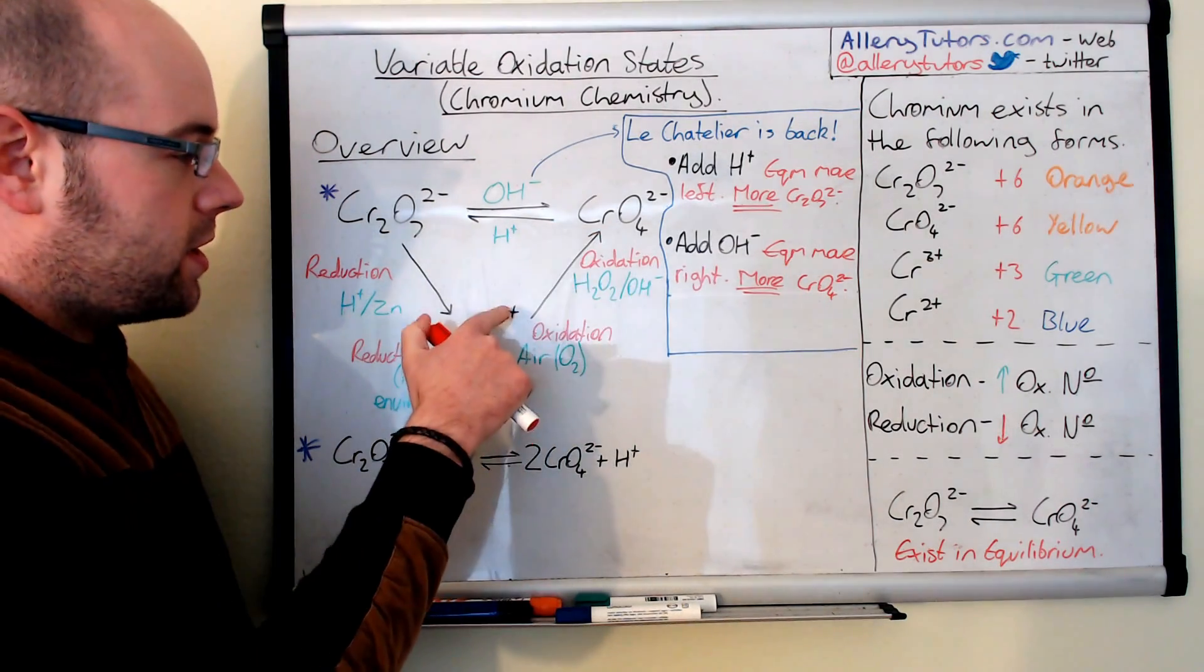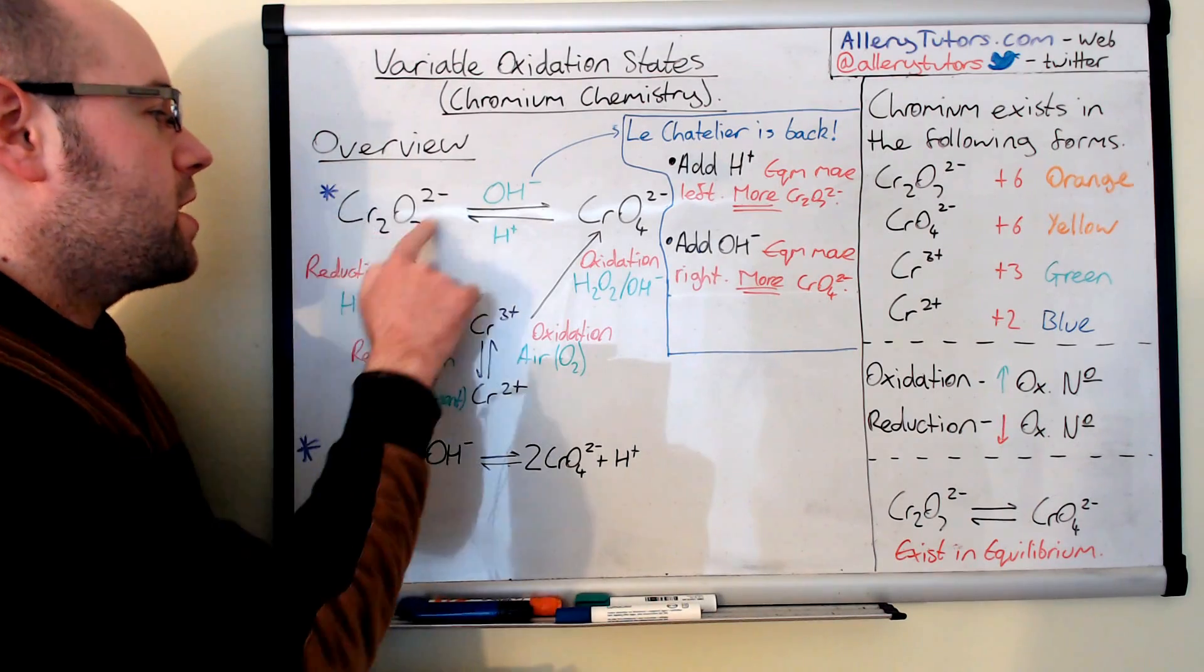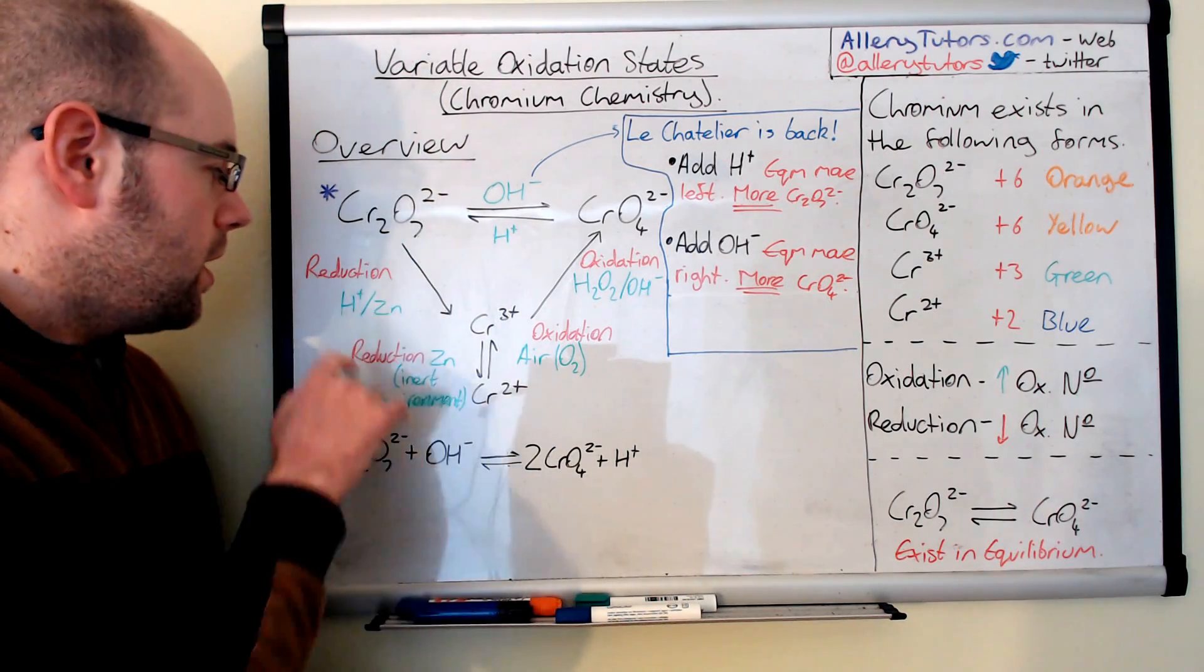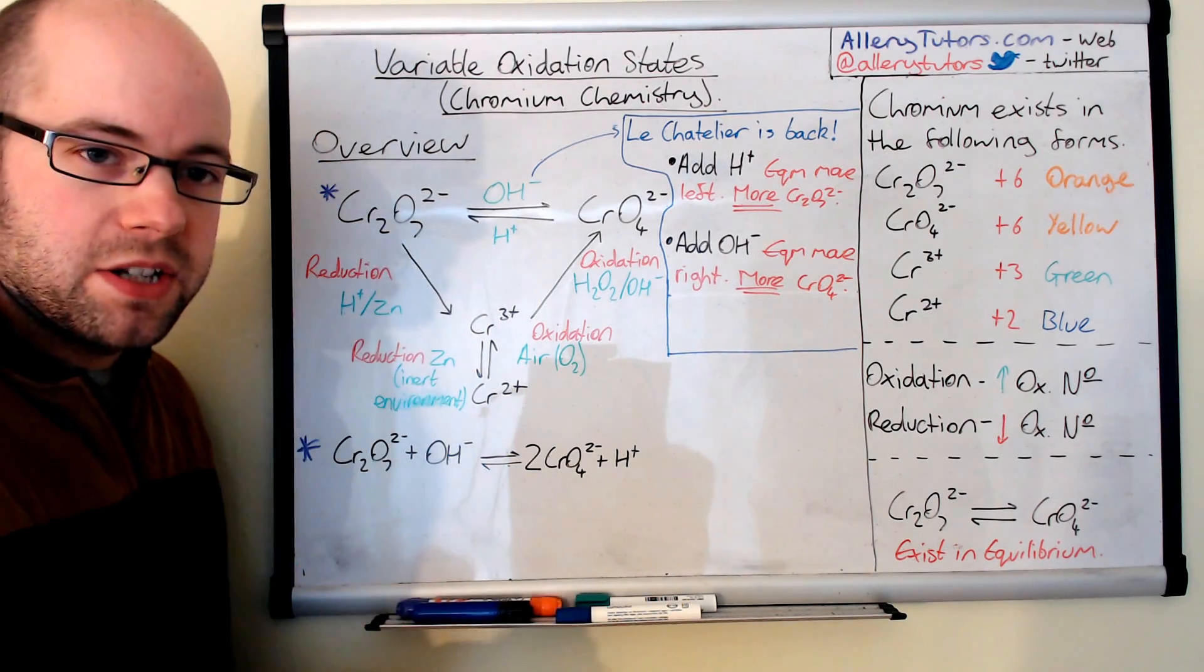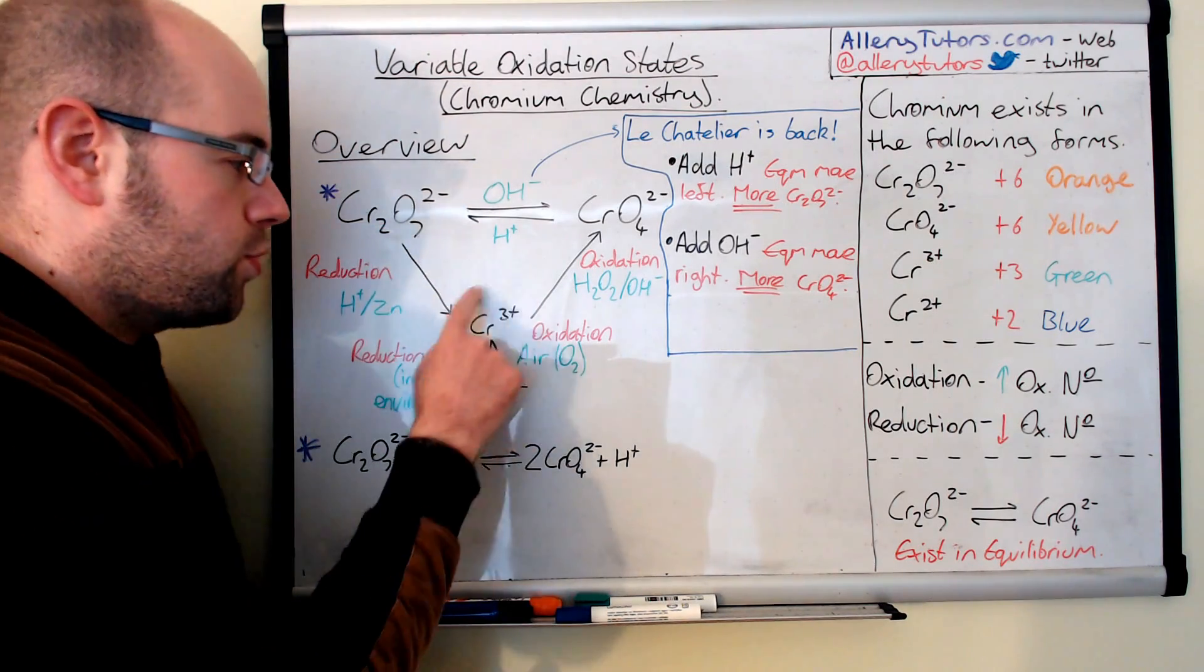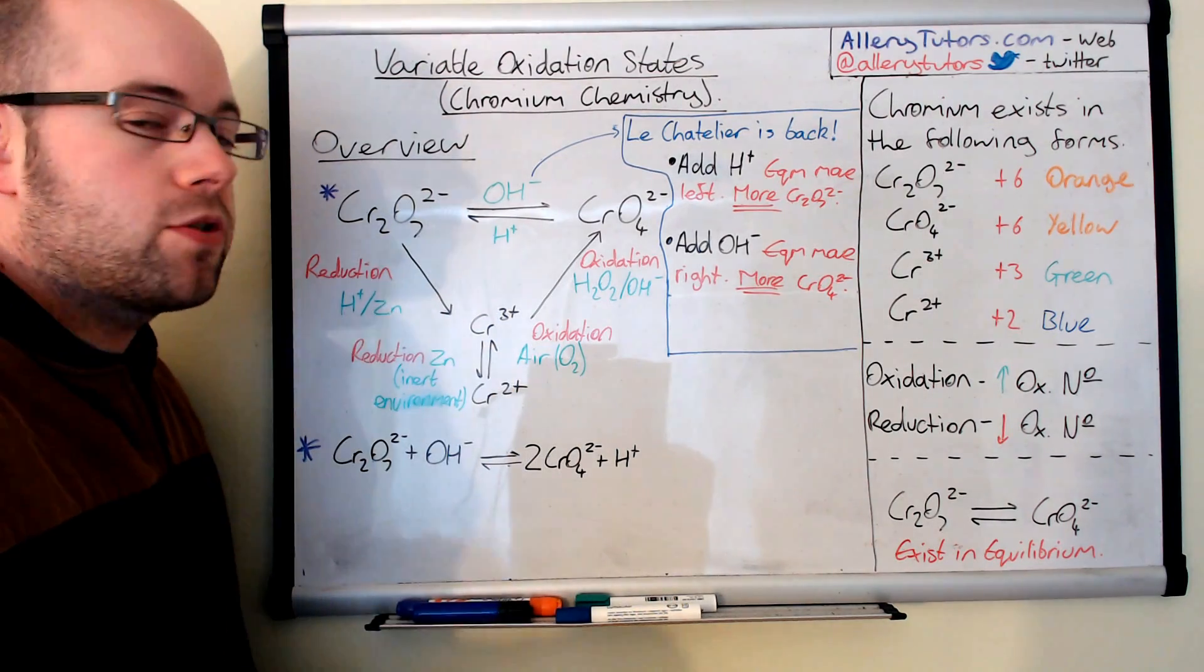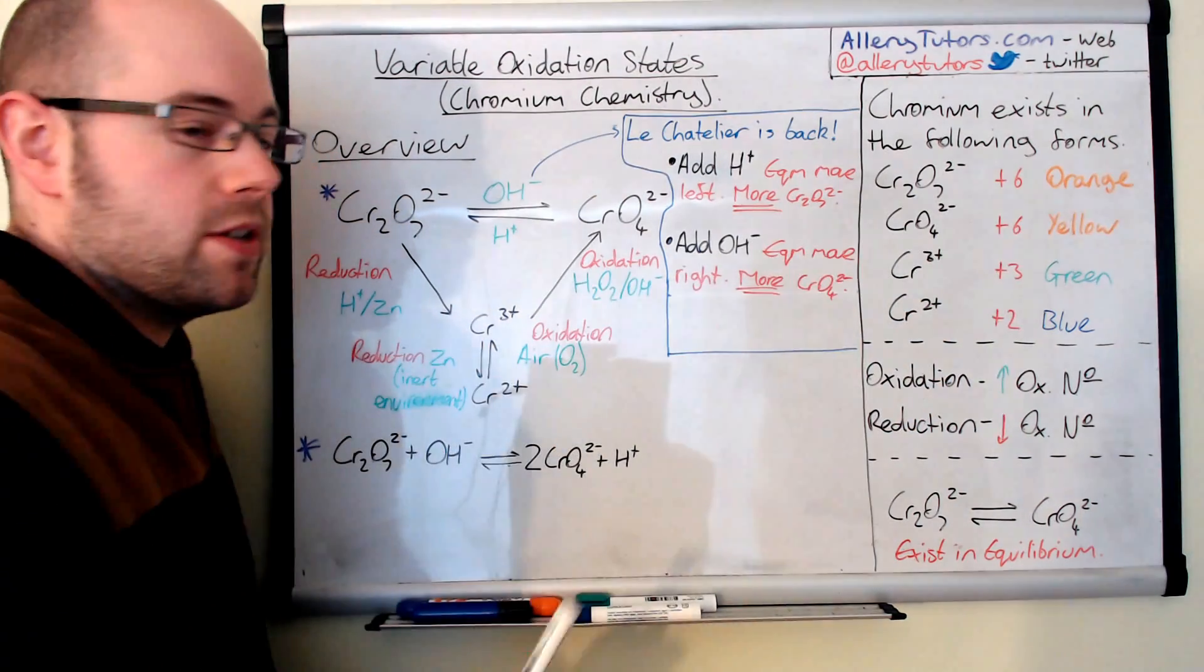So if we just look at some of the other reactions that happen, so let's say we can take our dichromate, our orange solution, and if we add zinc and an acid to it, effectively what happens is we can reduce it to form chromate ions, sorry, chromium ions, which is chromium 3+. Now chromium 3+ is a green colour.